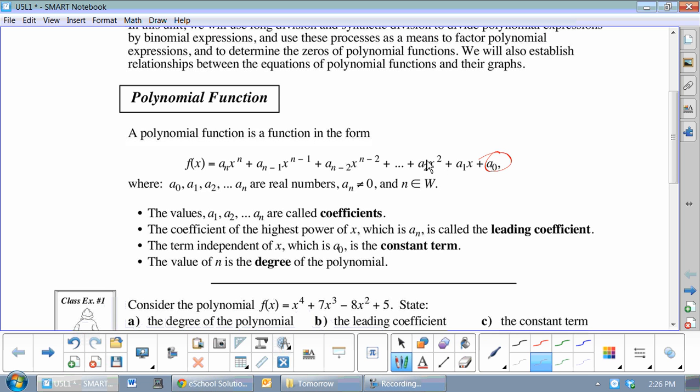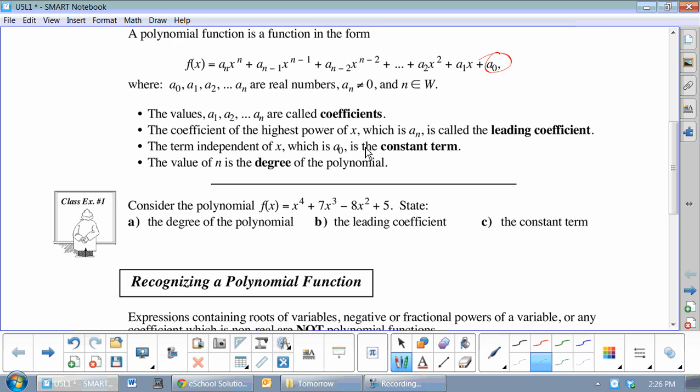Just remember, exponents will always be in the natural numbers. That's 1, 2, 3. So if we look at this one here, the degree, we've got a 0, 2, 3 and a 4. So degree 4, because it's the biggest. The leading coefficient will be with that biggest, and that's 1. And the constant term is a term that does not have any variables. So that's 5.